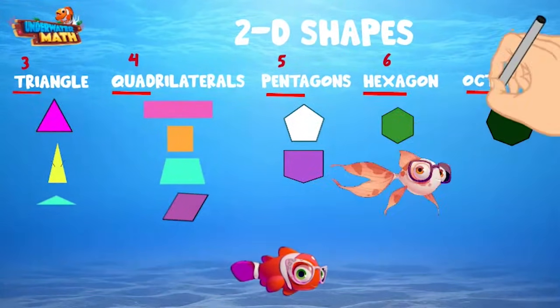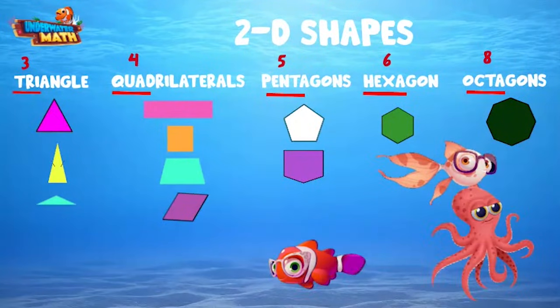Finally, we have octagons. These are eight-sided shapes and got its name from octo meaning eight, kind of like an octopus which has eight tentacles.